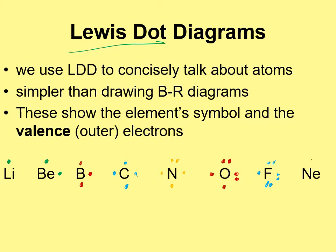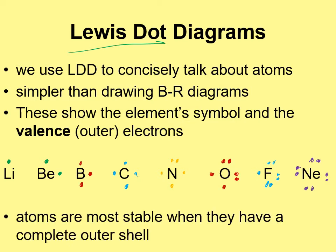Neon has eight valence electrons — it also has two inner ones, but we ignore them in the Lewis dot diagram. That is how we draw Lewis dot diagrams: a very quick way to convey almost the same information as a Bohr-Rutherford diagram, but focusing on those valence electrons.